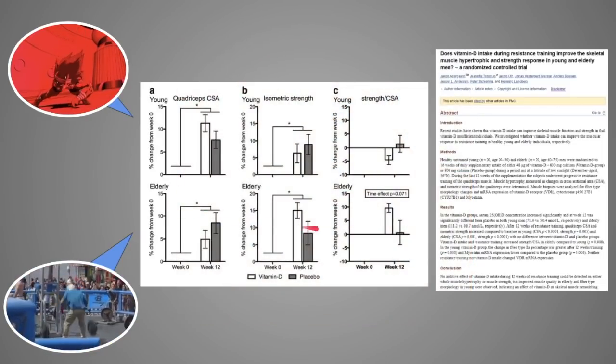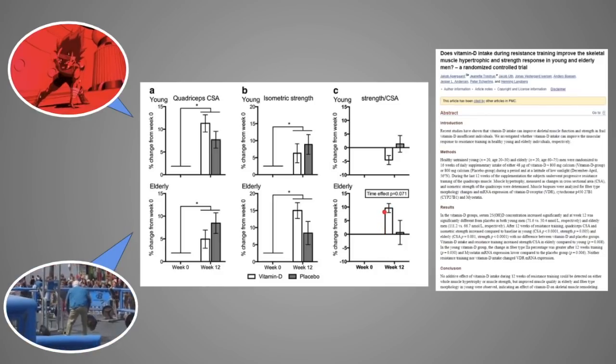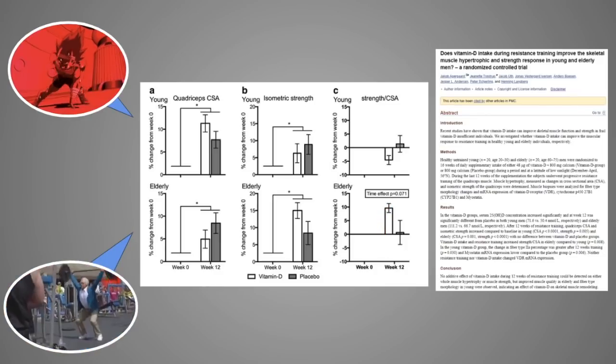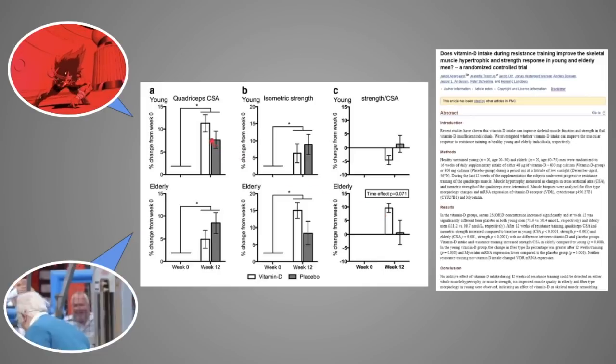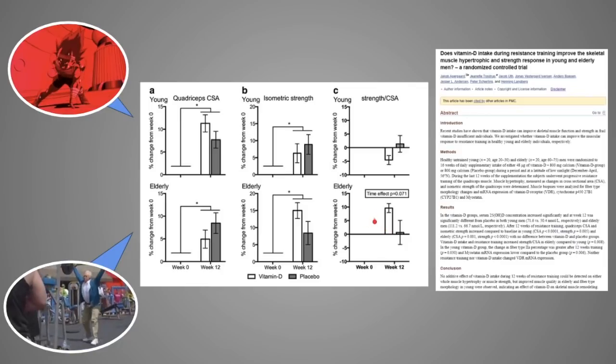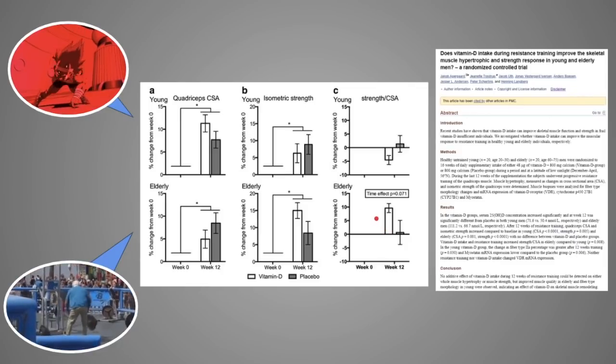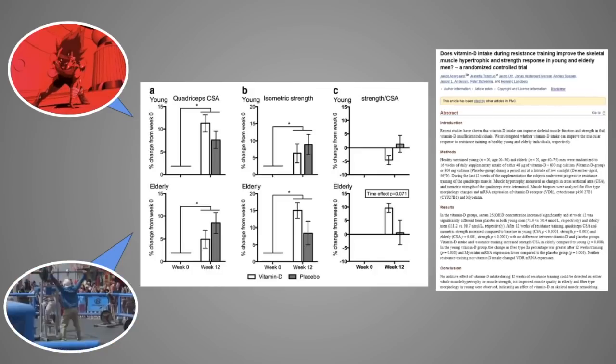As far as strength, only the older group noticed a vast increase in the strength to TSA ratio, which is pretty much how efficient your body is at producing force. So the young group put on a ton of gains more than the placebo group, and the old group put on a lot more strength. And this is in spite of the fact that they used a very pussy dose of vitamin D.